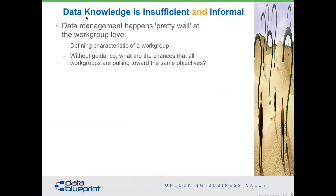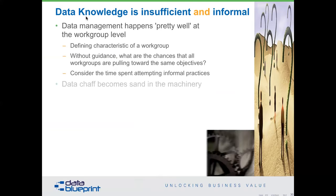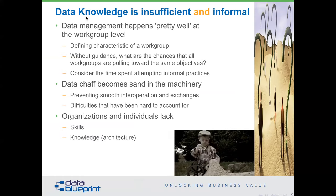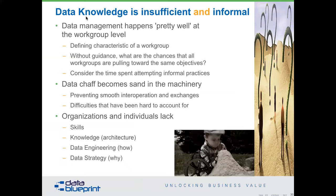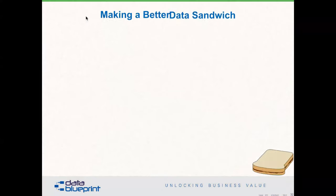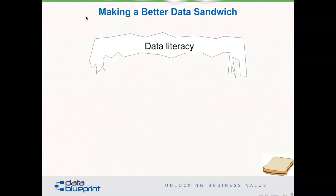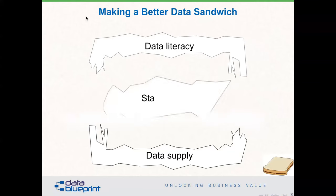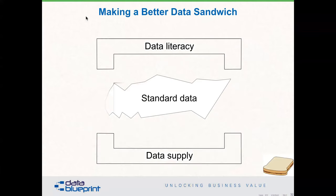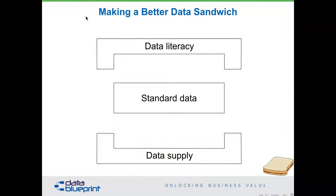Data knowledge around the organization is informal and insufficient. Data understanding happens well at the workgroup level, but data chaff becomes sand in the machinery. If you have that sand in the machinery, it's going to impact your business in thousands and millions and billions of ways that are really unknown. That sand, that grit, is going to get in the way of improving the literacy of your organizations, cleaning up your data supply, and selectively applying standards. When you do that, it starts to become cleaner and smoother, and then we can get them all to work together.